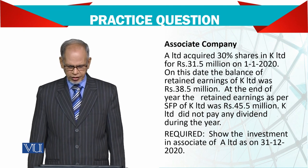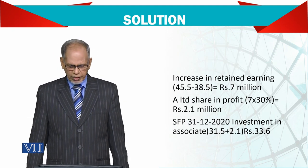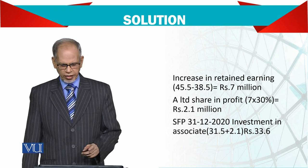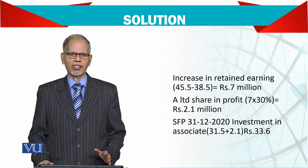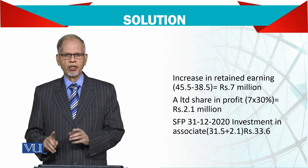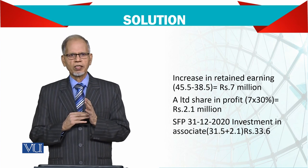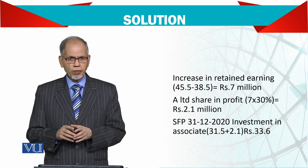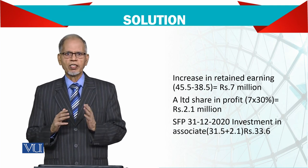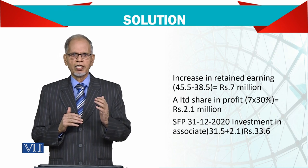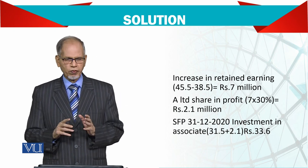Show the investment in associates of A Limited as on 31st December 2020. The solution: increase in retained earnings is 45.5 million minus 38.5 million, which equals 7 million. You acquired 30% of that, so your profit share is 2.1 million. Note: if you had acquired shares on 1st July instead of 1st January, you would only take 6 months' share of that profit. In this case, the whole year's profit applies, but only your 30% portion.